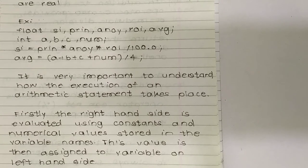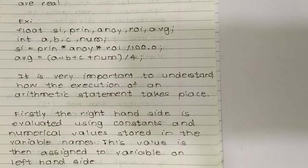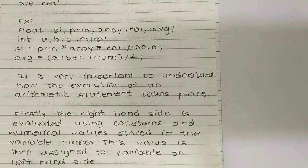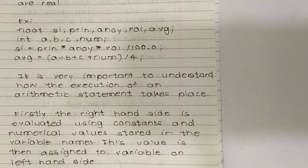For example, in the statement avg = a + b + c + num / 4, the values on the right-hand side are evaluated first, and then the result is assigned to avg on the left-hand side.